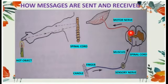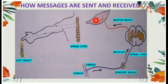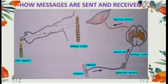From the spinal cord, through the motor nerves, the message is sent to the muscles to tighten them and pull the hands away. In future, when you come across any hot object, automatically your hands will be pulled back.